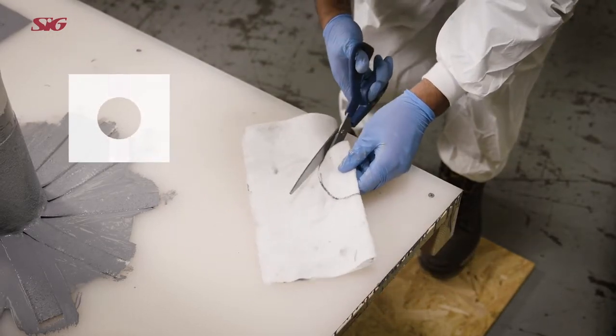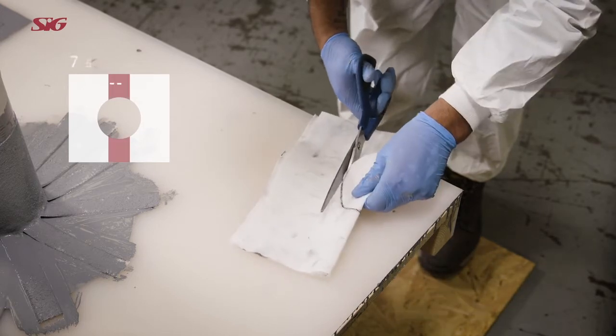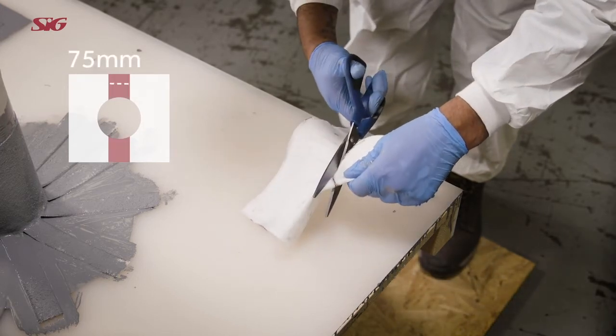Alternatively, cut two pieces of fabric so that they go around the pipe with an overlap of 75mm.